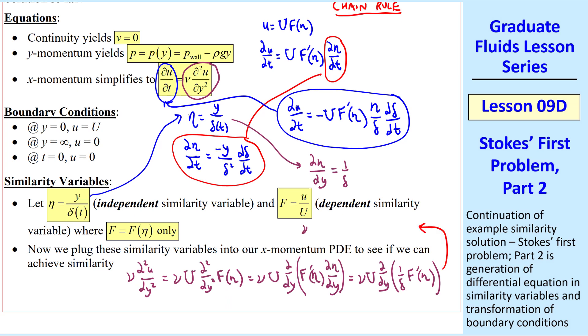So this term becomes ν ∂²u/∂y² equal νU 1/δ² times F''(η), since we're taking another derivative with respect to y and using the chain rule. We'll substitute this now into our equation.